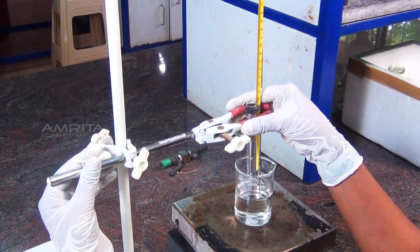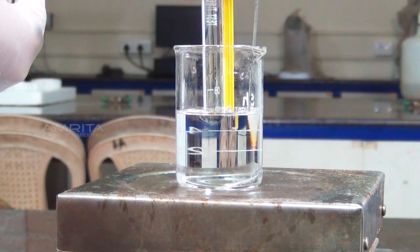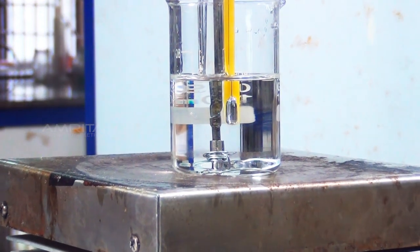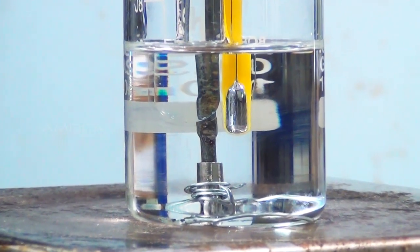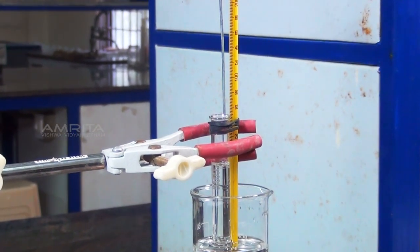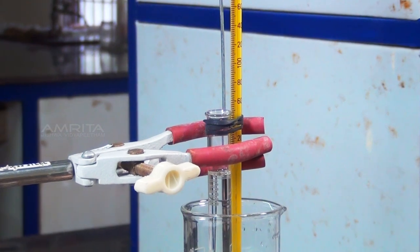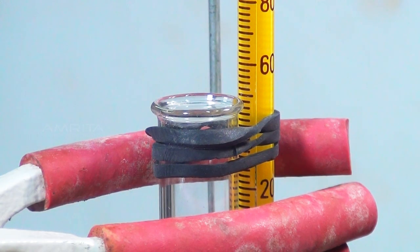Lower the thermometer along with the test tube into the liquid paraffin bath. Adjust the setup so that the thermometer bulb is well under the liquid paraffin bath and the open end of the test tube with the rubber band is sufficiently outside the liquid paraffin bath.